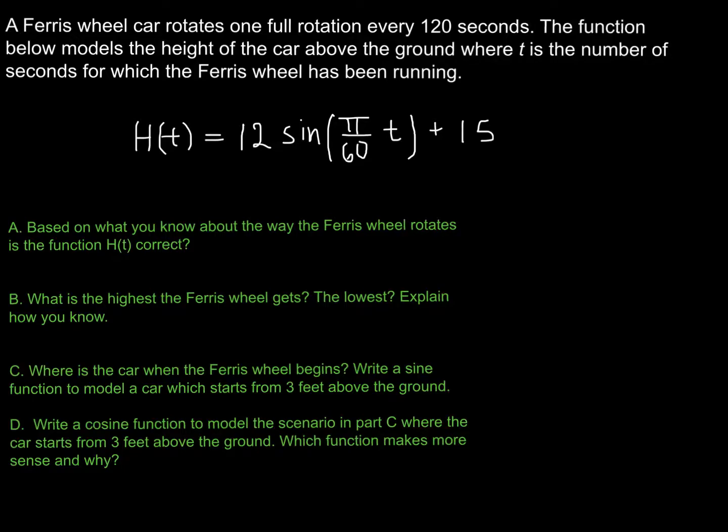We already discussed part A here, thinking about the fact that it makes one full rotation every 120 seconds. So that means it goes from maximum point to maximum point in 120 seconds. So my period should be 120 seconds. And I know I can compute that by doing 2π divided by π over 60, which is multiplying by 60 over π, which gives me 120. So this is a correct function for my model.